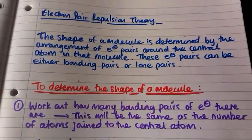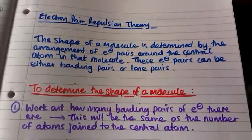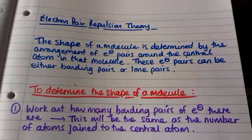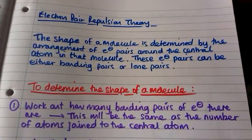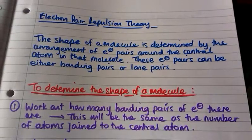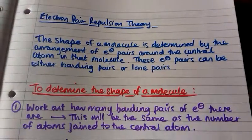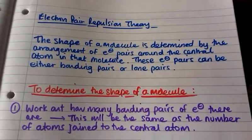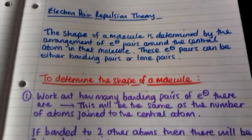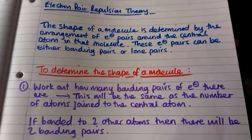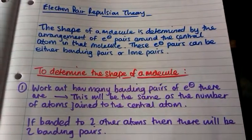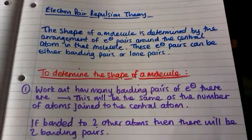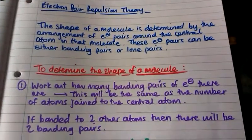Firstly, we need to work out how many bonding pairs of electrons there are, and this is quite simple because that will be the same as the number of atoms joined to the central atom in the molecule. For example, if the central atom is bonded to two other atoms then there will be two bonding pairs of electrons present.